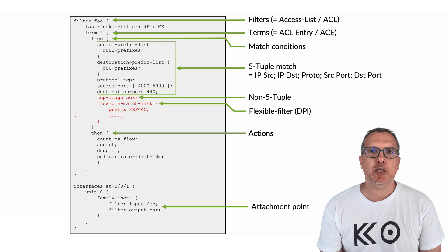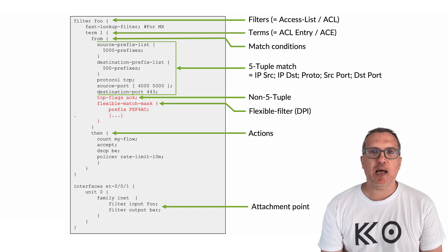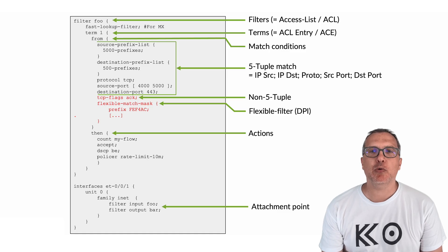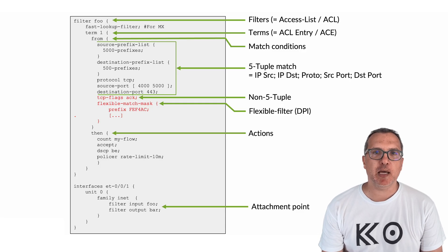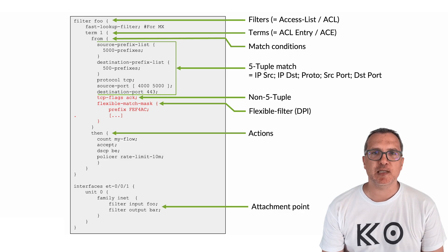On platforms like PTX and MX, a single filter can contain hundreds or even thousands of terms. Each term typically includes standard match criteria — the well-known 5-tuple: source/destination IP, source/destination port, and the protocol field. Highlighted in red on this slide are the less common match types like TCP flags, packet lengths, or flexible match, which allows deep inspection into the payload. Also remember, each of these fields or match criteria can scale to very large values. Once a match is found, a corresponding list of actions — simple or complex — is executed on the packet. A filter instance is often attached in a direction to a logical interface, as shown here.